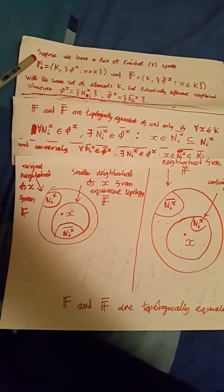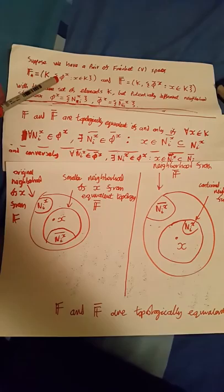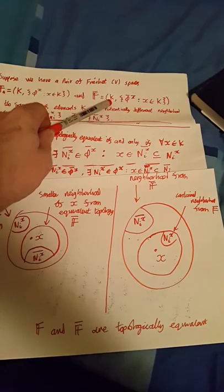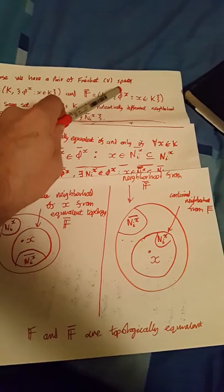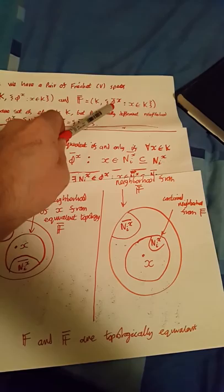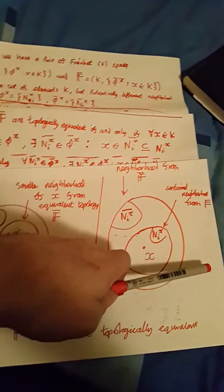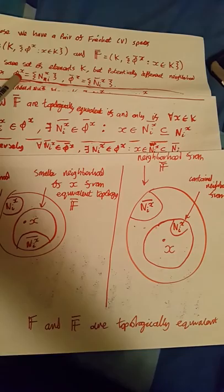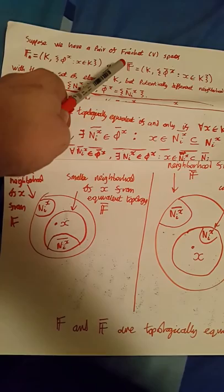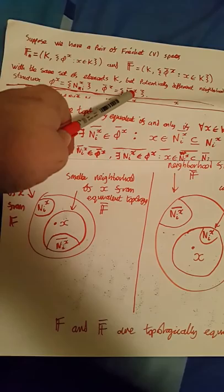Suppose we have one Fréchet space F, consisting of a set K of elements each associated with a collection of neighborhoods. Suppose we have another Fréchet space F-bar with the same set K of elements, but a different neighborhood structure — the elements of K in F-bar may have different collections of neighborhoods. We denote the neighborhoods of points in F as N_XI, and the neighborhoods in F-bar as N_I-bar.